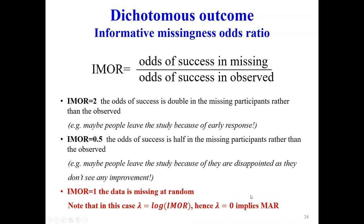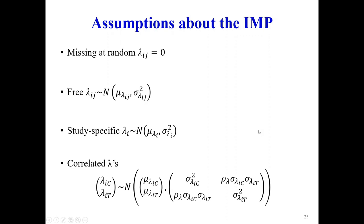If we go back to the log-odds ratio scale, lambda equals zero implies missing at random. We can make various assumptions about lambda: lambda equals zero is the missing at random assumption. Lambda can have a different mean value and variance for any study i in group j — it can be study-specific. We can also assume that within a study the lambdas are the same, or that the lambda in the control group is correlated to the lambda in the treatment group.